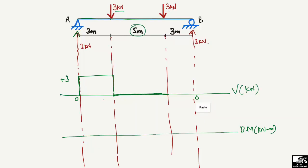At the first point load of 3 kilonewton acting downward, the shear force drops from plus 3 to 0. For the next 5 meters there is no load, so shear force remains 0. Then the second 3 kilonewton point load acts downward, bringing the shear force to minus 3. It then remains at minus 3 until the end, where RB of plus 3 brings it back to 0.